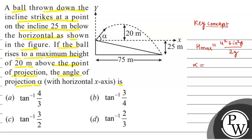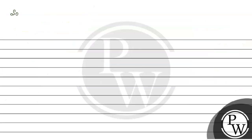Now here the angle of projection given is alpha. So wherever we have used theta, we need to use alpha instead. Therefore we write h_max = u² sin²α / 2g. Now let's see the solution. The first formula we are going to use is h_max = u² sin²α / 2g.